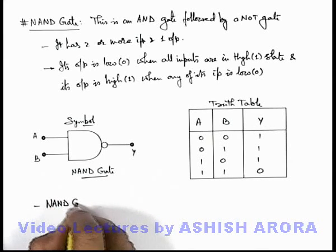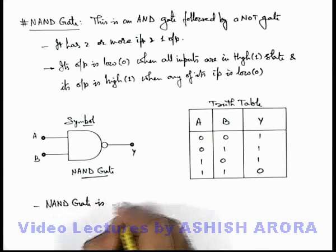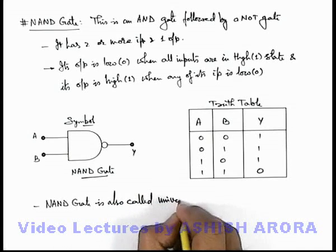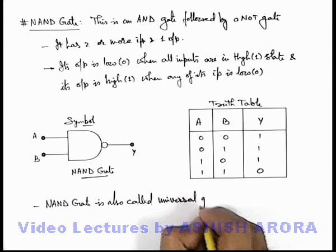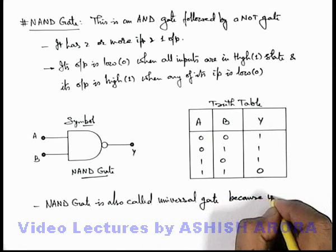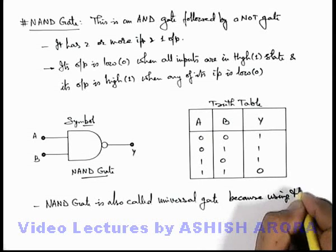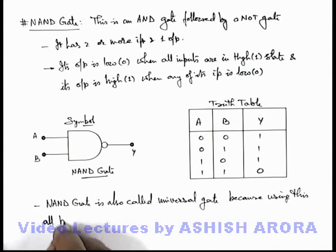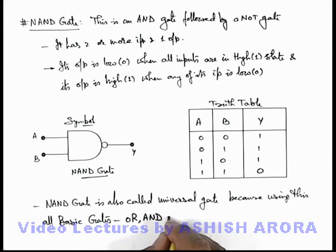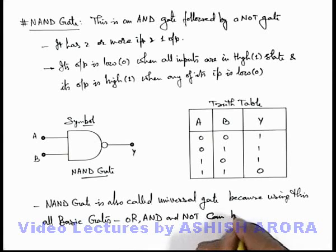This NAND gate is also called universal gate, because using this all basic gates which we've just now discussed in the previous sections, these are OR gate, AND gate, and NOT gate, can be realized.